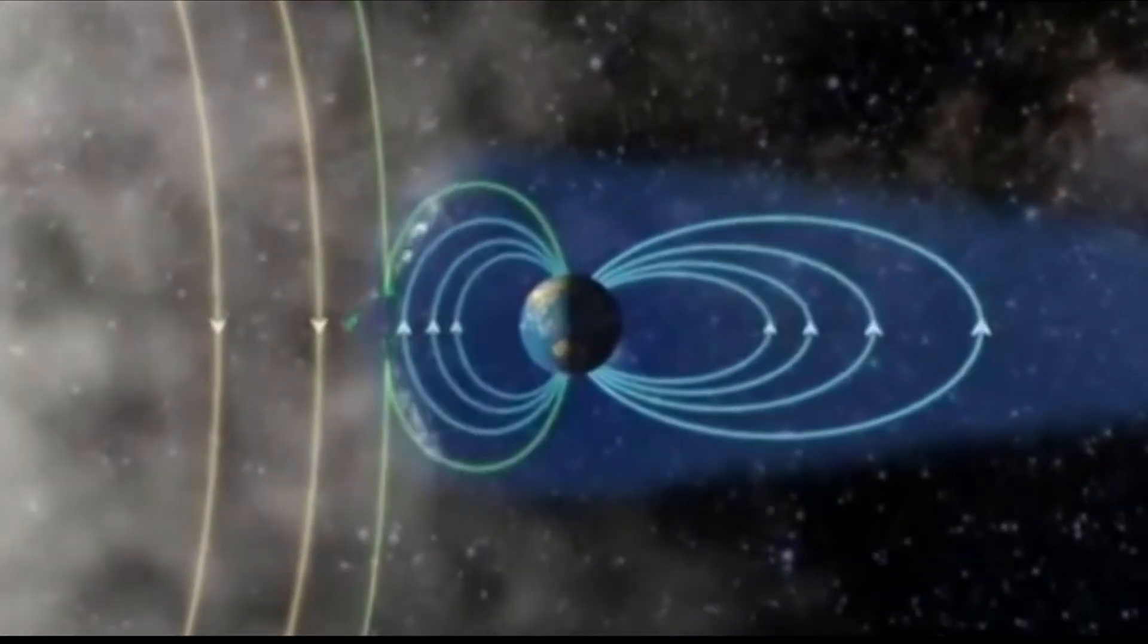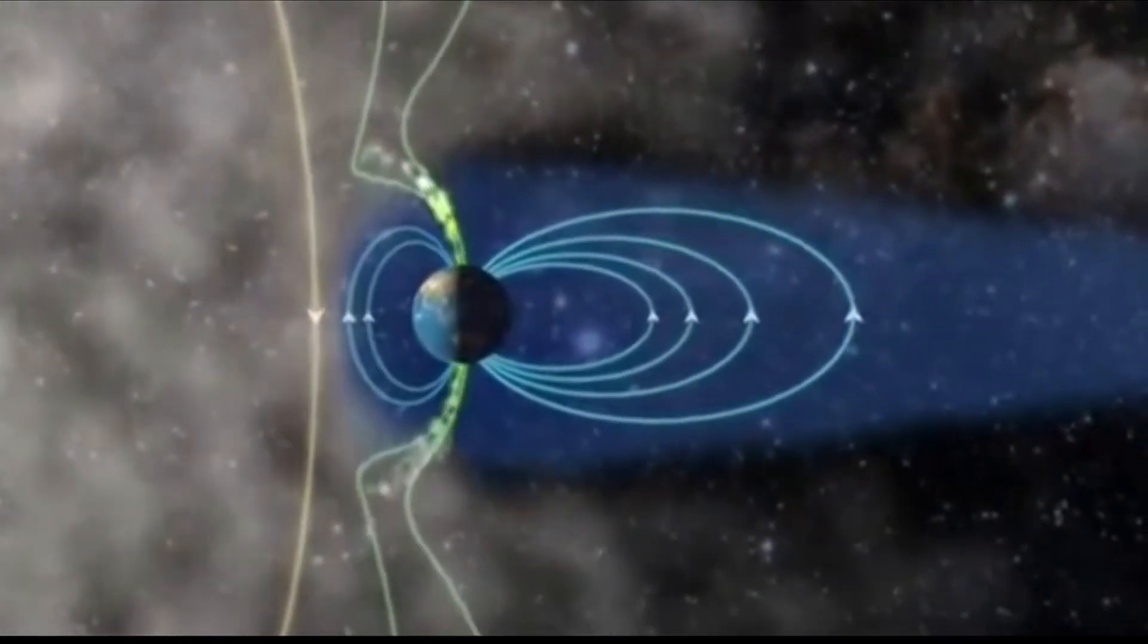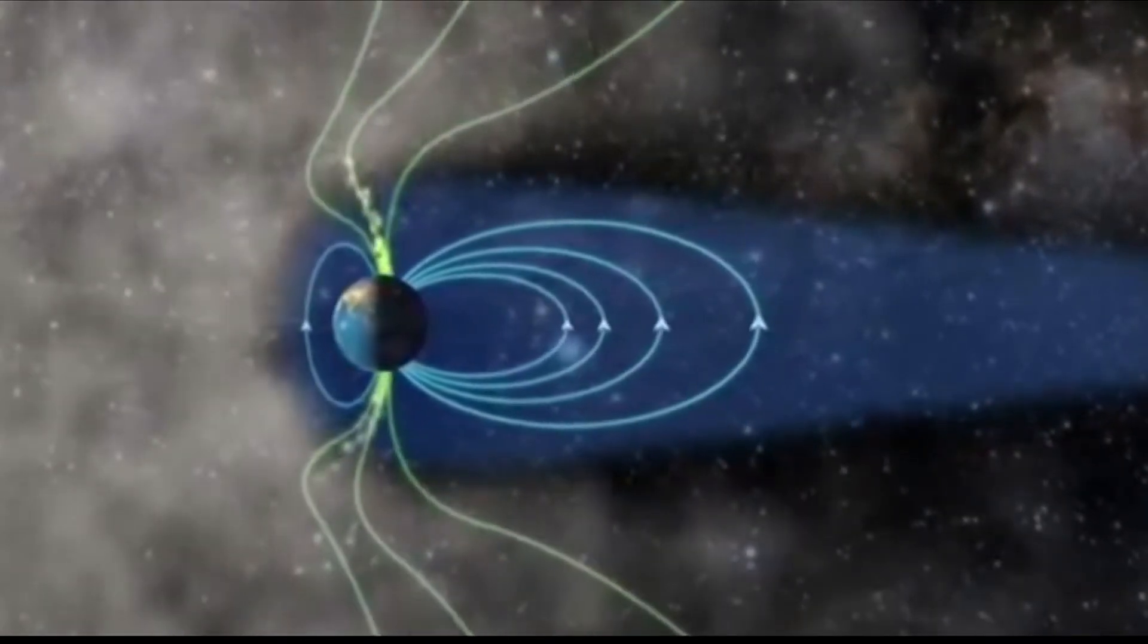The magnetic fields couple together and that creates a funnel where plasma streams down the daylight side of the poles. This is the daylight aurora.